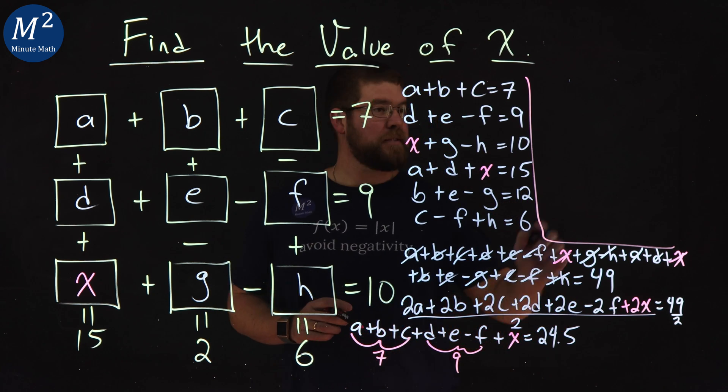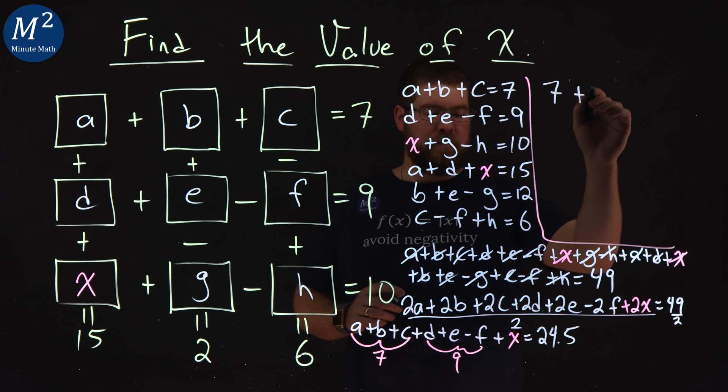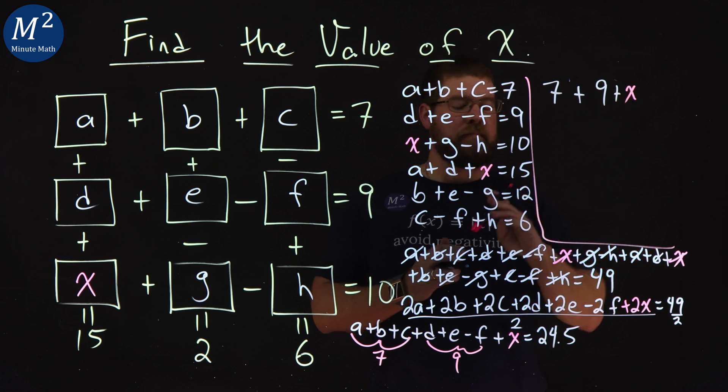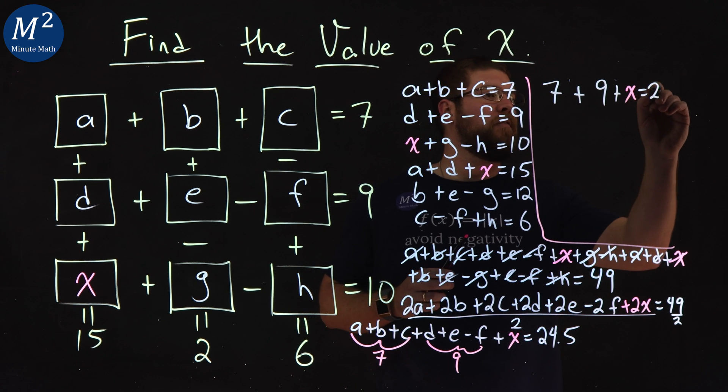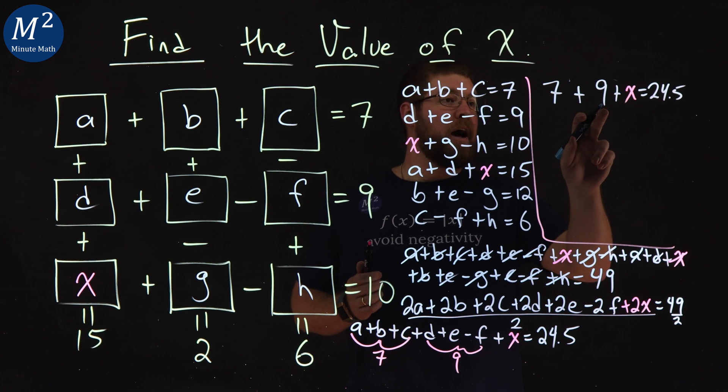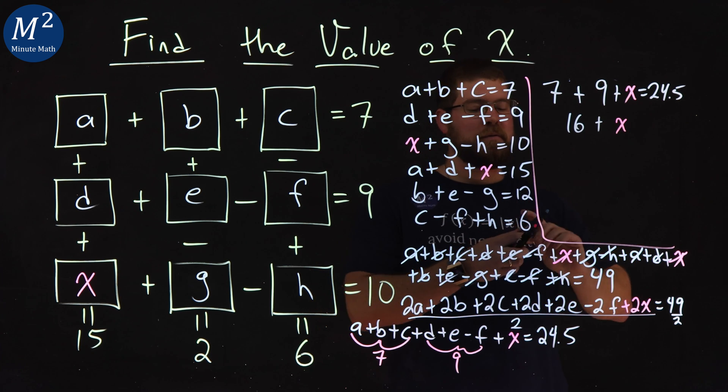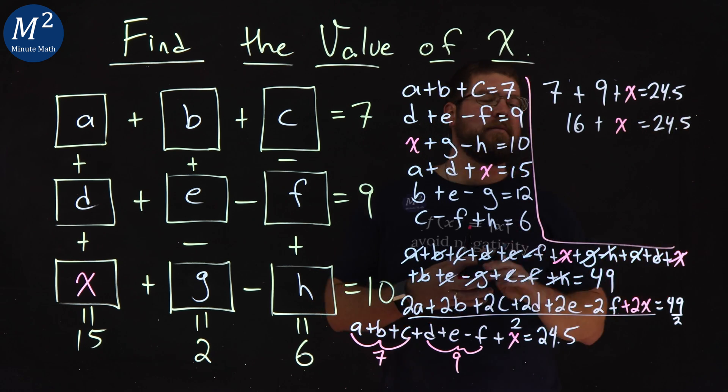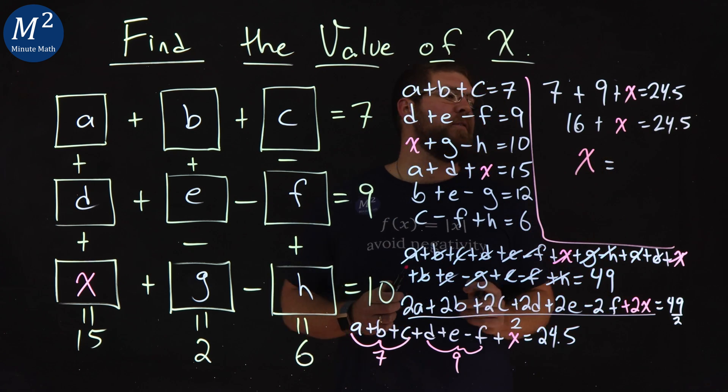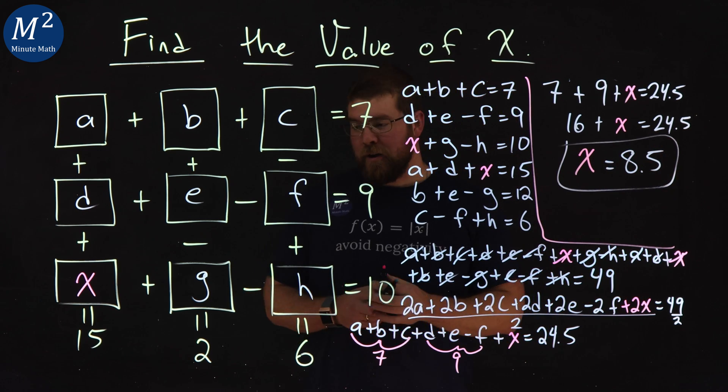So instead of A plus B plus C, I can write that as a 7 plus D plus E minus F is a 9, plus a 9, plus the X value here is equal to a 24.5. And now this should be pretty easy to solve. 7 and 9 make a 16 plus X equals a 24.5. Subtract the 16 to both sides. We have X by itself. And 24.5 minus 16 is an 8.5.